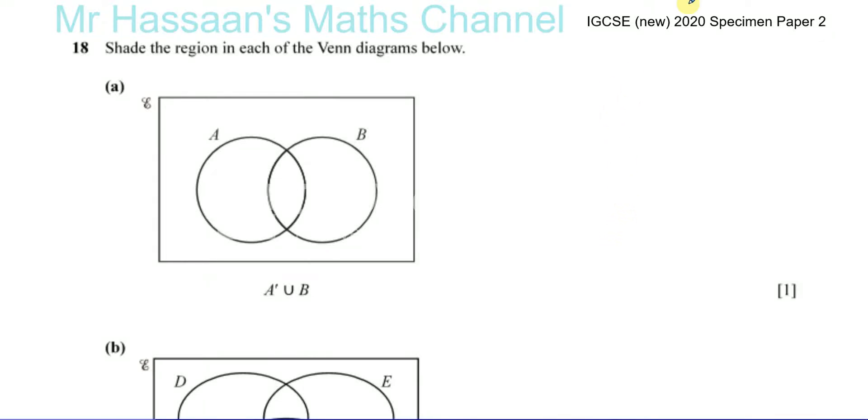Now for question number 18 from this specimen paper 2 from the new 2020 syllabus. In this question we are asked to shade the region in each of the Venn diagrams below. This is a question that some students find a bit confusing, but there's nothing really to be confused about.